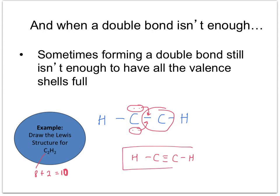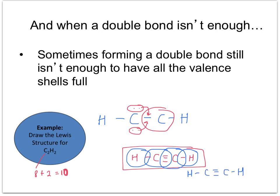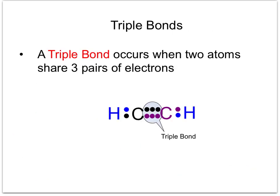In the final picture there are no lone pairs. The hydrogen has a duet, each carbon has an octet, and the other hydrogen has a duet. The correct picture has a triple bond between the two carbons. A triple bond is when three pairs of electrons are between two atoms.